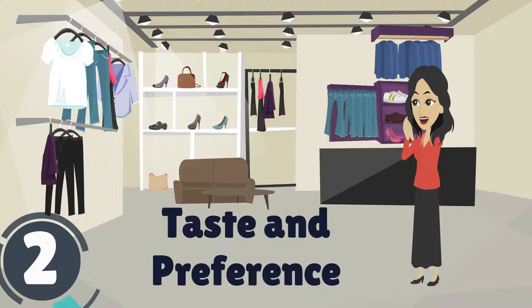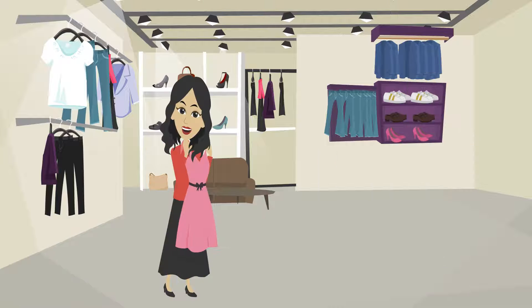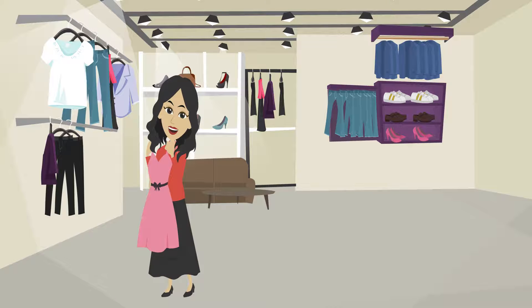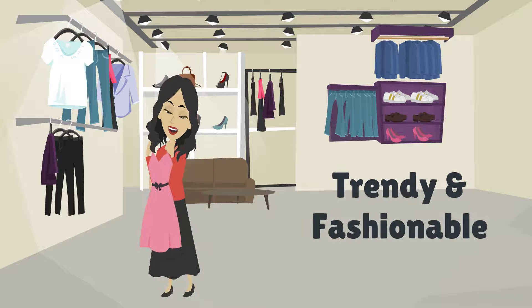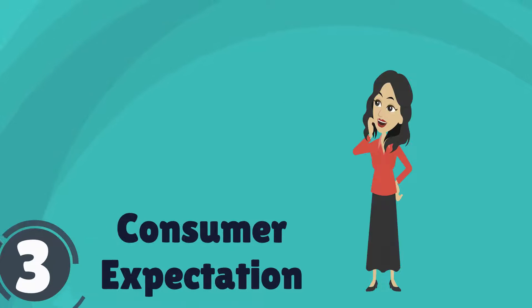Second is the taste and preferences that Lily has. She might choose products that are trendy or more fashionable. Three, consumer expectation is another determinant.